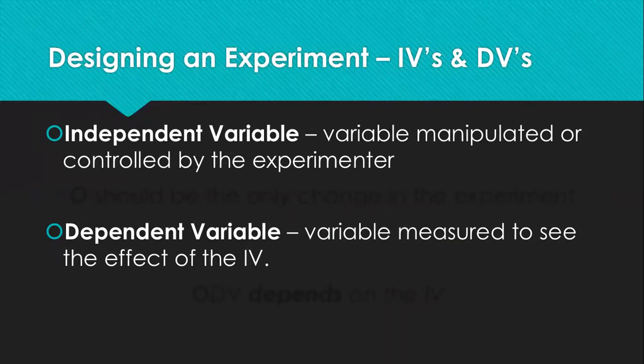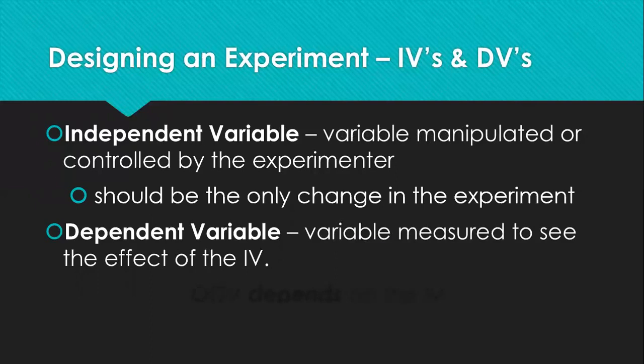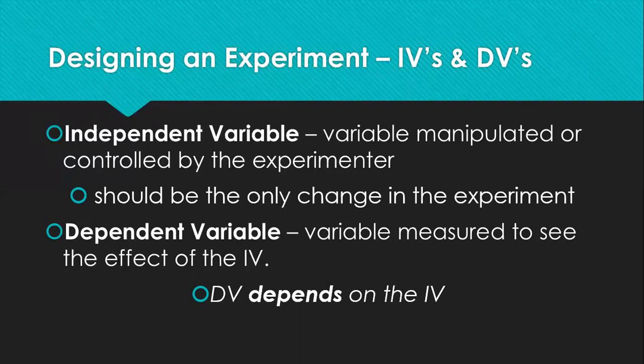The independent variable is the variable we manipulate — what creates the experimental group. The experimental group receives the IV manipulation. The dependent variable is the variable we measure to see the effect of the IV. In a true experiment, the only difference between the two groups is the independent variable. The effects of the independent variable are shown on the dependent variable — whatever happens to the dependent variable depends on the independent variable.